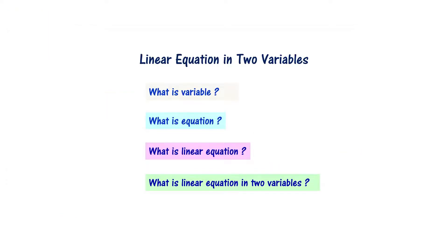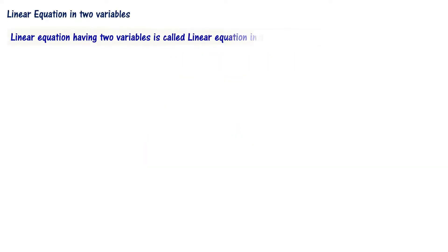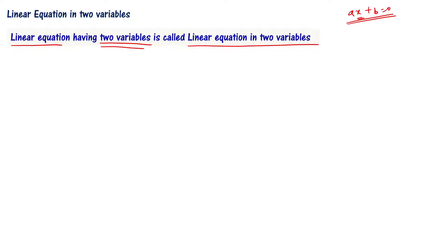Now we understood about linear equations. Let us understand what is a linear equation in two variables. A linear equation having two variables is called a linear equation in two variables. For example, x plus y equal to 10 — here x is a variable and y is also a variable. The power of x is 1 and the power of y is 1, so it is a linear equation in two variables.